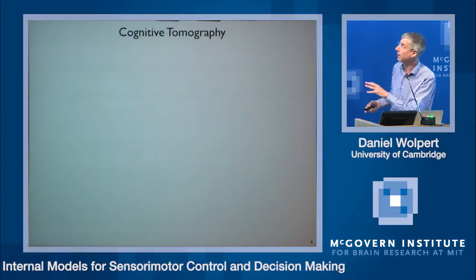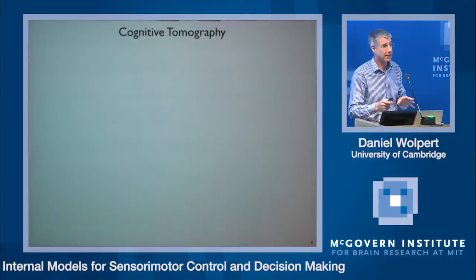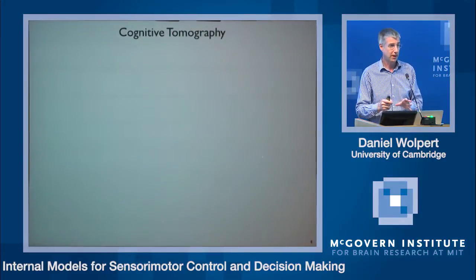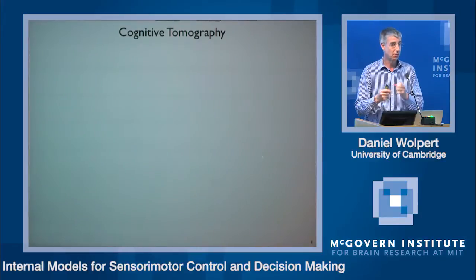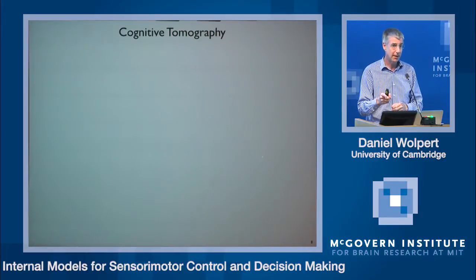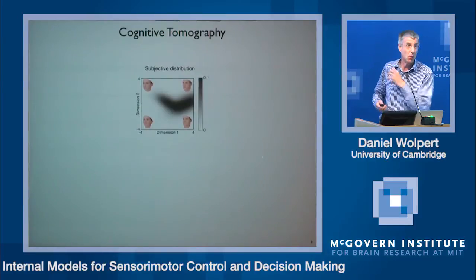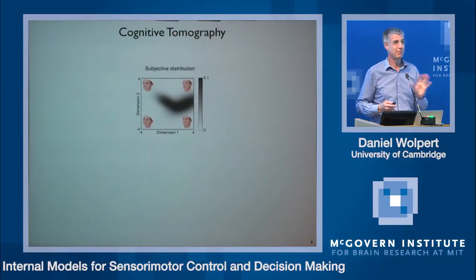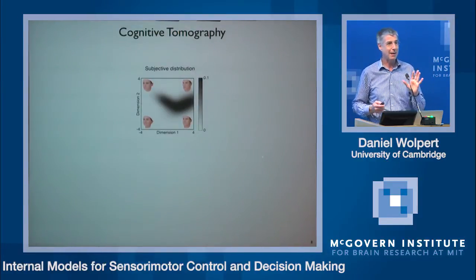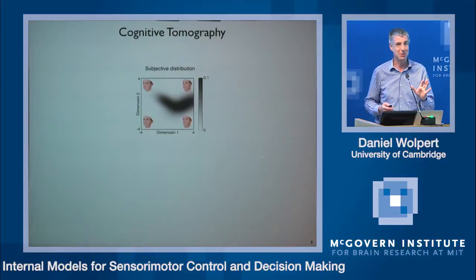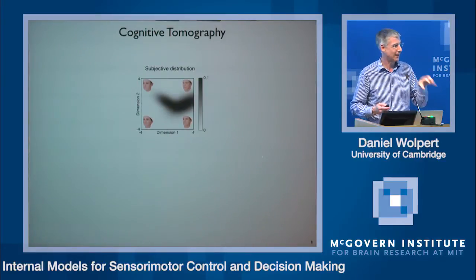I'm going to tell you about a technique we've developed with Matt Lengel called cognitive tomography, which aims to extract high-dimensional priors from low-dimensional measurements. Like tomography, we take very low-dimensional measurements and create high-dimensional representations. One reviewer hated this term; I rather like it. We're going to work with faces — I'm really out of my comfort zone here, I'm not a face person or a vision person — but it was a nice example to test whether the technique works.